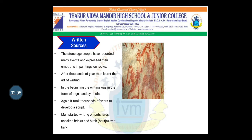Here you can see the paintings in this picture. After thousands of years, man learned the art of writing. In the beginning, writing was in the form of signs and symbols. Again, it took thousands of years to develop a script — a proper way of writing.